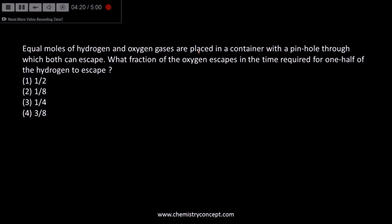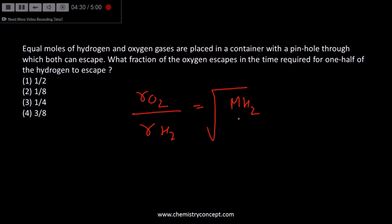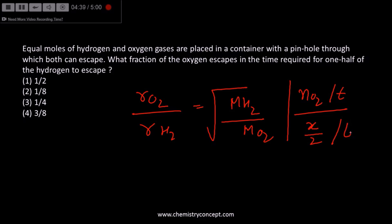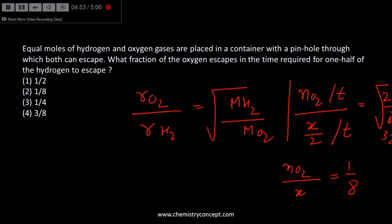The next is a numerical based on Graham's law of diffusion. The rate of diffusion of O2 divided by rate of diffusion of H2 equals √(M(H2)/M(O2)). As per the question, moles of O2 per unit time divided by moles of H2 in the given time equals √(2/32). Solving this, the ratio equals 1/8.